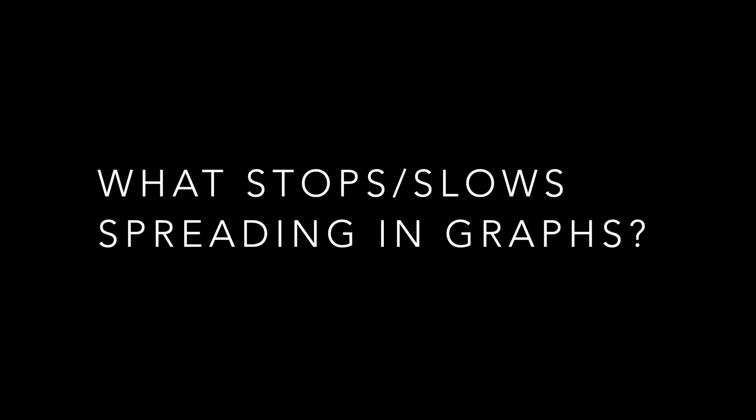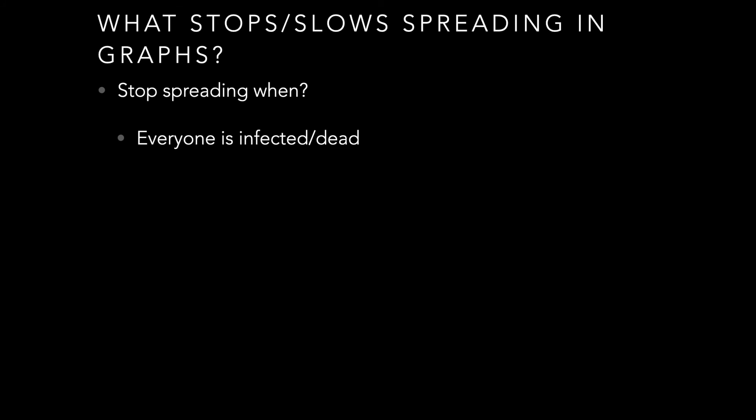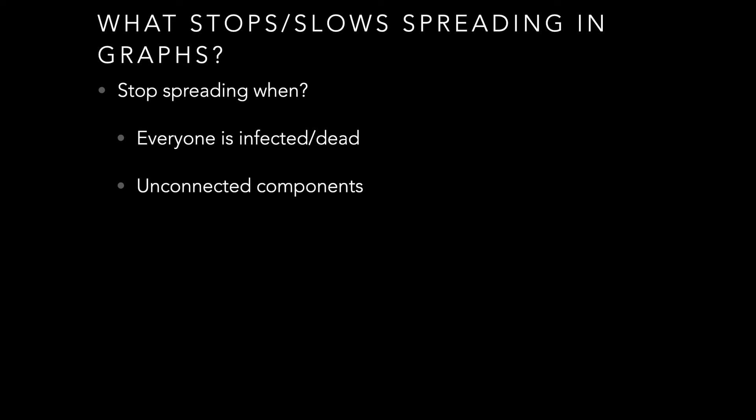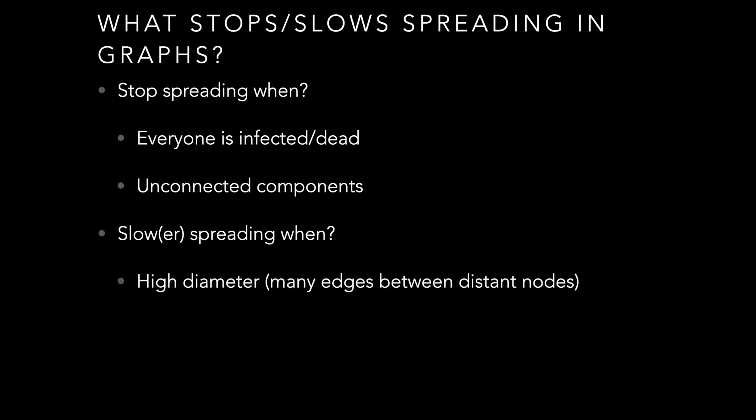What stops or slows spread? From a simplistic standpoint, a contagion will stop spreading when all nodes are infected or dead, or when there are disconnected components in the graph with no way for an infection to jump between them. For slowing spreading: high diameter means the only way for a contagion to propagate is by crossing a very long path, which slows spread. Likewise, if a network has low density, there's less opportunity to spread — most of the edges that could exist don't exist, so you can't jump easily to many nodes.